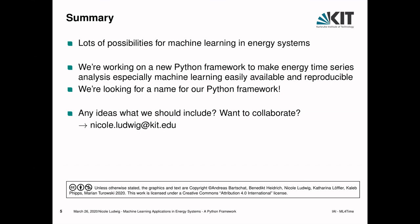Johannes asks if there are any references or preliminary information — perhaps a GitHub repository — where he can get more details on the work. Nicole says she can share more information. She has a GitHub account but there isn't much there yet. If you check the IAI website — the Institute for Automation and Applied Informatics — you'll find some publications. The GitHub repository is currently private because it's not ready for public release, but if you're interested, she would be happy to share it privately.